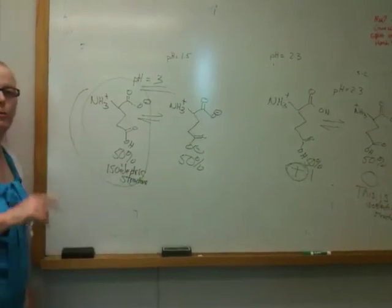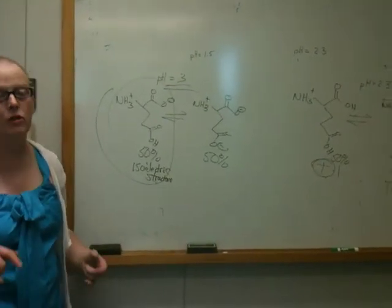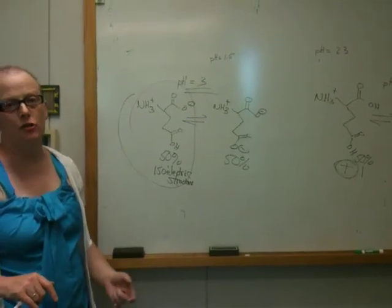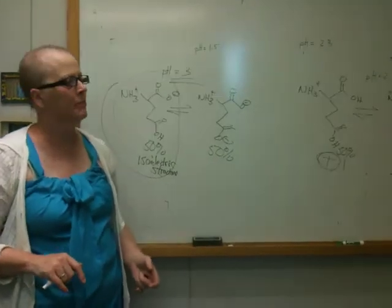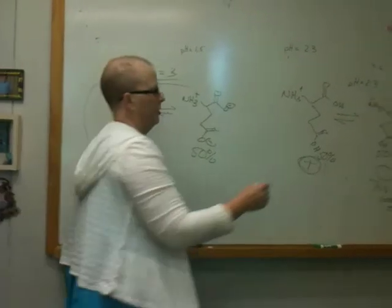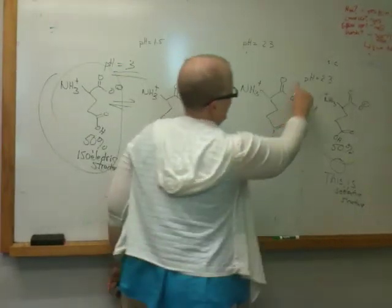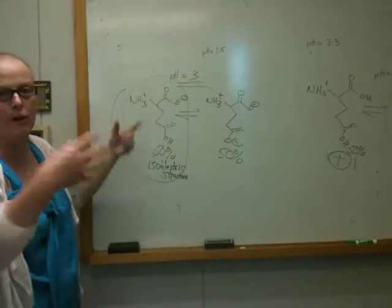Now as I showed you before, for a typical amino acid, the pI, which is the pH at which you have the isoelectric structure, is an average of the 2 pKa's. But this particular amino acid has 3 pKa's. The isoelectric structure, which is shown here as well, occurs between this pH, 2.3, and this pH, 3. So this structure occurs right in the middle there.